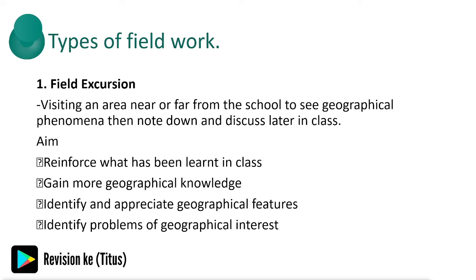These are the types of fieldwork. A field excursion is visiting an area near or far from the school to see geographical phenomena, then note down and discuss later in class. The main aim is to reinforce what we have learned in class. For example, in Form 1 we took a topic called weather and looked at the weather station, so a visit from school to a weather station would be a field excursion. Its aims also include gaining more geographical knowledge, identifying and appreciating geographical features, and identifying problems of geographical interest.